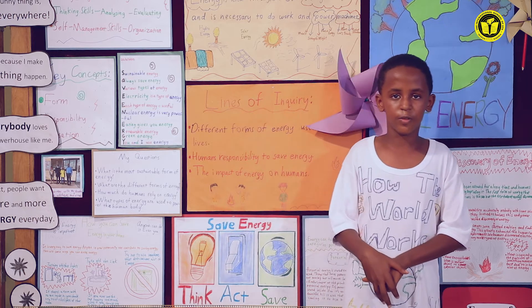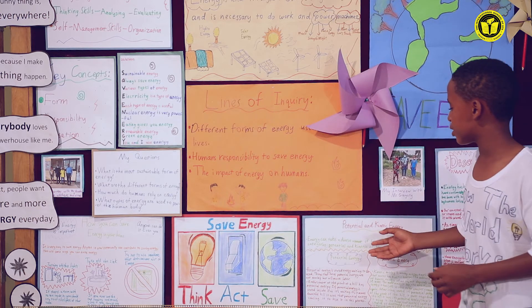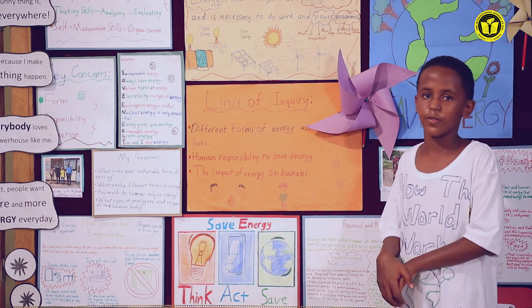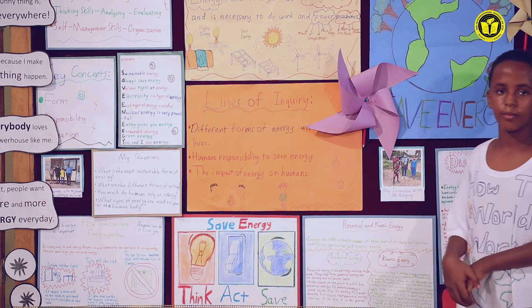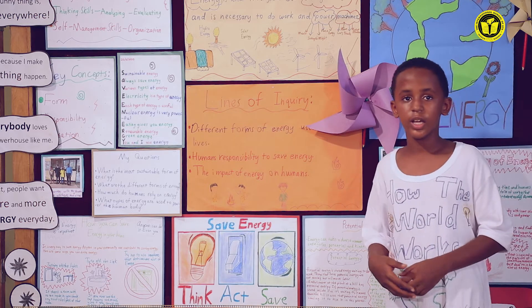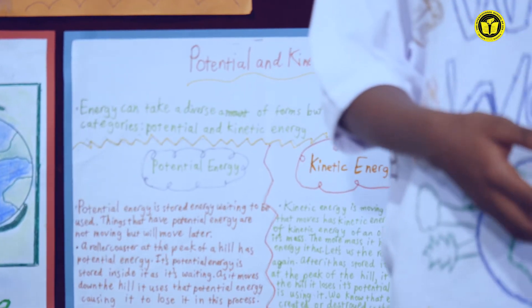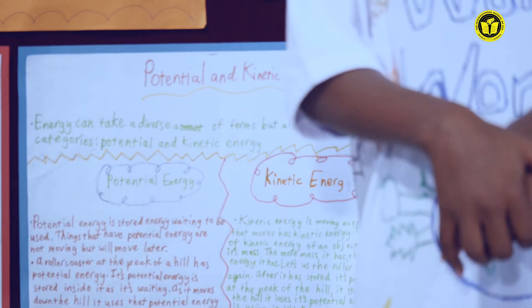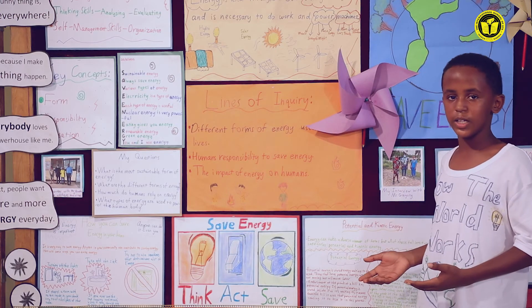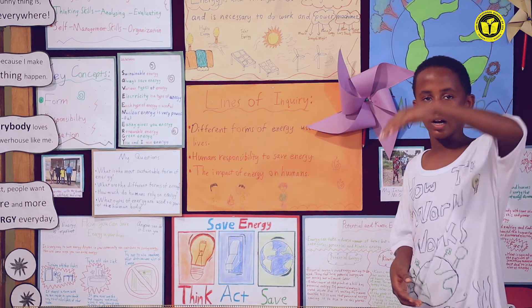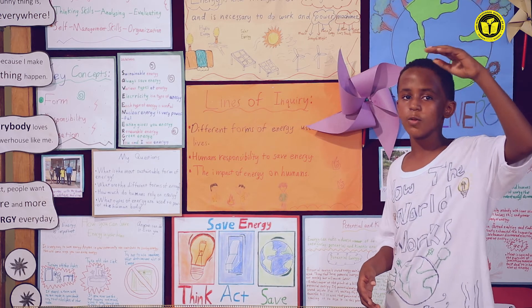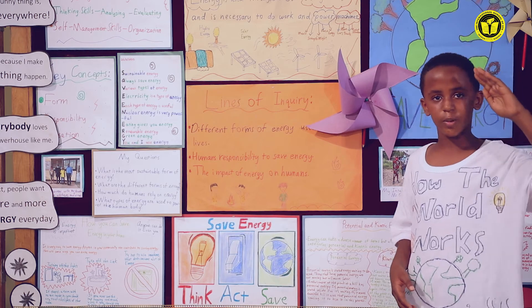I can't forget to mention the two categories that all forms of energy fall into: potential and kinetic energy. Potential energy is energy that is stored within an object. All objects that are going to move have potential energy. For example, let's say there is a roller coaster at the top of a hill. As it waits at the top, it is storing potential energy, and as it moves down, it loses the potential energy.